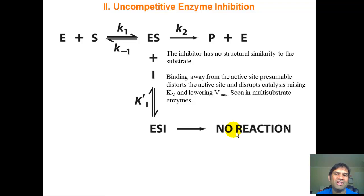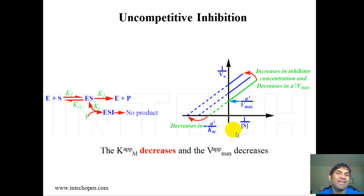The classic feature of uncompetitive inhibition on the Lineweaver-Burk plot is parallel lines. Remember: parallel lines mean uncompetitive inhibition.